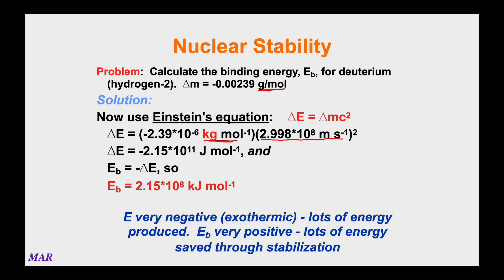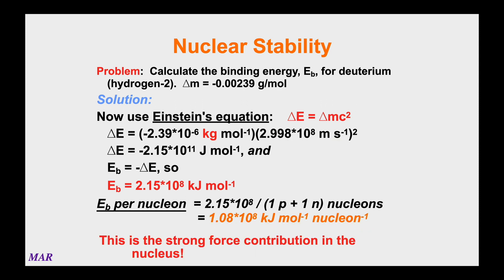Binding energy is always the opposite of delta E, so you take the positive version. I turned joules per mole into kilojoules because that's what people usually do. The very positive binding energy just means you have lots of energy staved through the stabilization through making the atom. A lot of times they'll talk about binding energy per nucleon. A nucleon is just a particle in the nucleus. In this example we had one proton plus one neutron, or two nucleons, so if you take that 2.15 × 10⁸ and divide by two, that gives you the kilojoules per mole of nucleons.